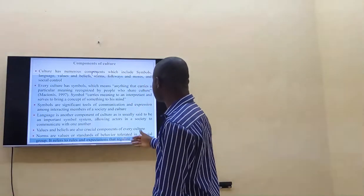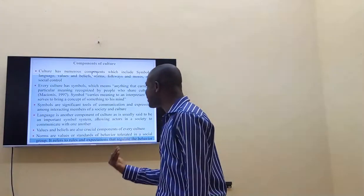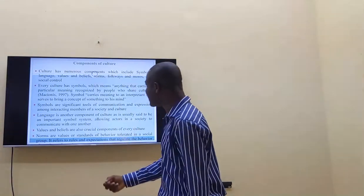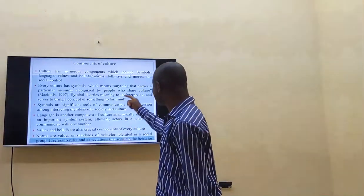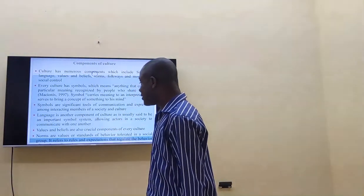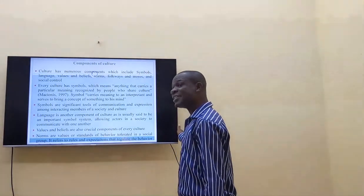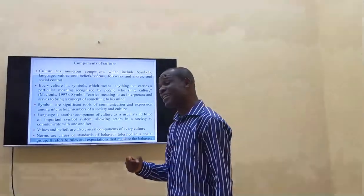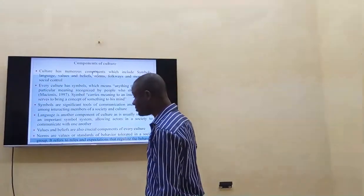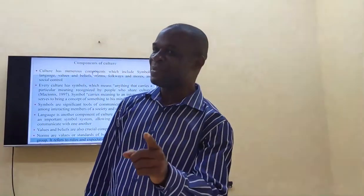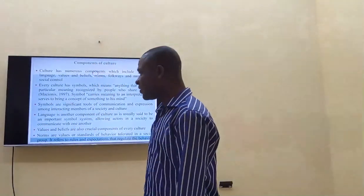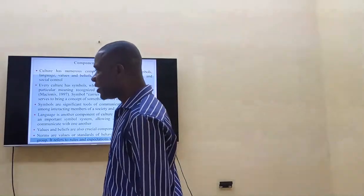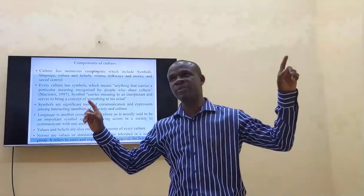Culture has numerous components which include symbols, language, values, beliefs, norms, and social control. Every culture has symbols, which means anything that carries a particular meaning recognized by people who share that culture. That is a symbol. For instance, red may be a type of color but it can be a symbol of something for a particular group of people.